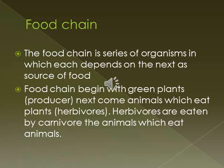Food chain. A food chain is a series of organisms in which each depends upon the next as a source of food and energy. Animals cannot prepare their own food; animals that eat plants are called consumers. All food chains begin with green plants. Green plants are producers. Next in the food chain come animals that eat plants — these are called herbivores. Herbivores are eaten by animals called carnivores.